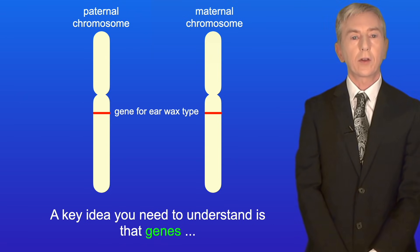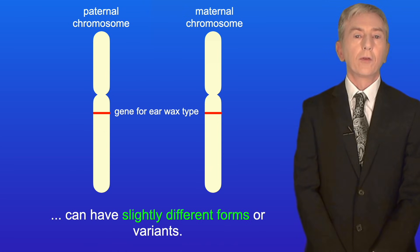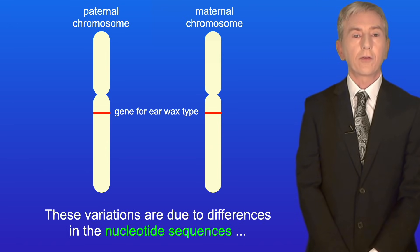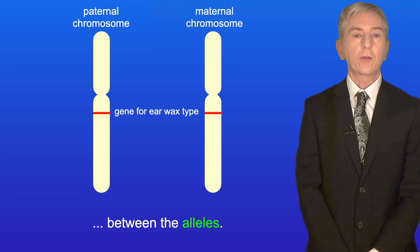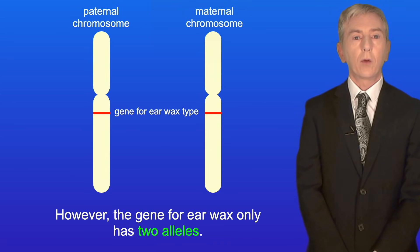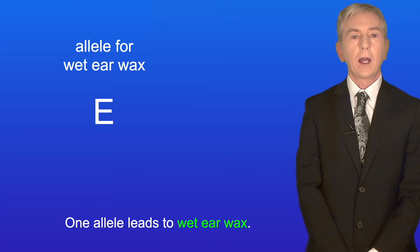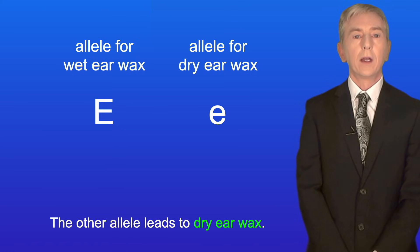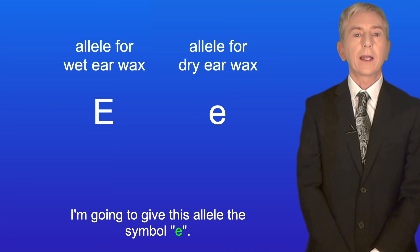A key idea you need to understand is that genes can have slightly different forms or variants — scientists call these alleles. These variations are due to differences in the nucleotide sequences between the alleles. Some genes have a large number of different alleles; however the gene for earwax only has two alleles. One allele leads to wet earwax, given the symbol capital E. The other allele leads to dry earwax, given the symbol lowercase e.